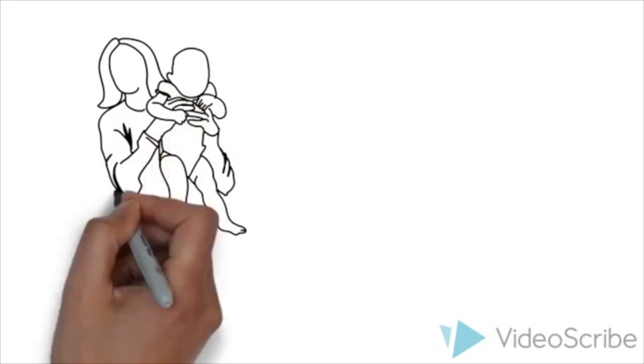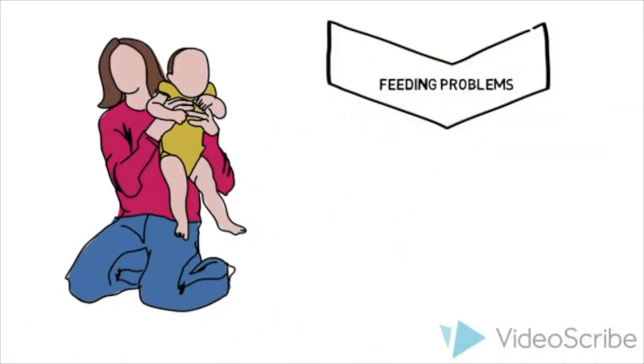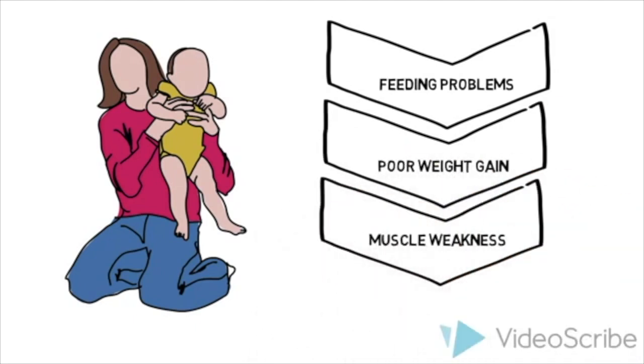Symptoms of the infantile form of the disease begin in the first month of life, with feeding problems, poor weight gain, muscle weakness, floppiness, and head lag.